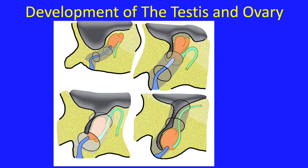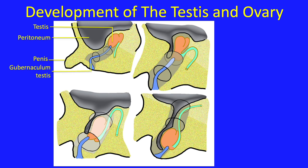To describe in more detail the steps taken by the testis to descend, let me show you the sequence of events — a review if you have had embryology, and helpful for understanding how inguinal hernias form. Let's label the relevant structures in a male fetus to gain an appropriate orientation. Similar homologous structures would be apparent in the female fetus. We see the penis, testis, peritoneum, gubernaculum testis, ductus deferens, and finally the inguinal canal.